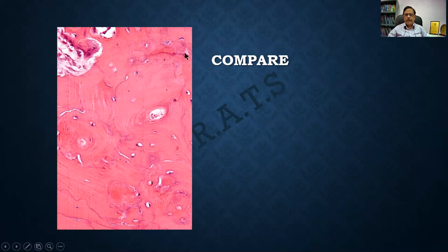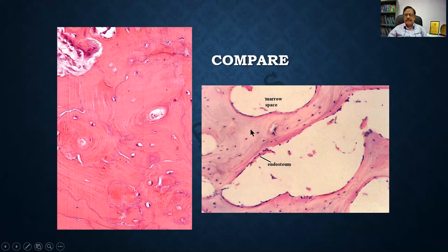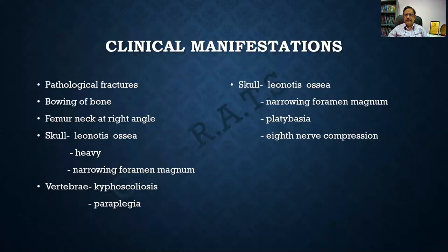For better understanding, compare the Paget's bony tissue with normal bony trabeculae. In normal bone, cells rimming it are the osteoblasts, which lay down new bone, and these are the osteocytes. Such an orderly structure is not seen in a case of Paget's bony trabecula.